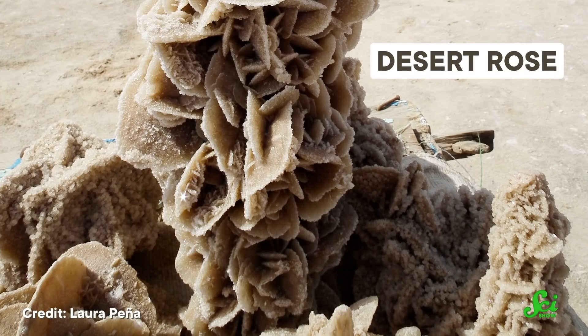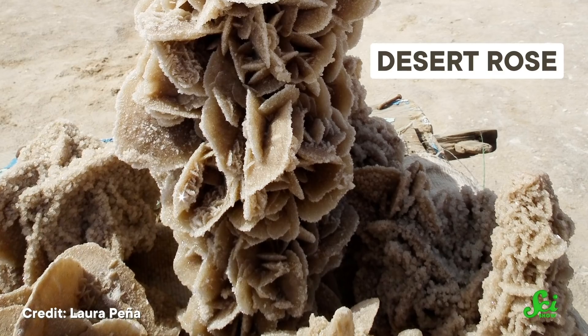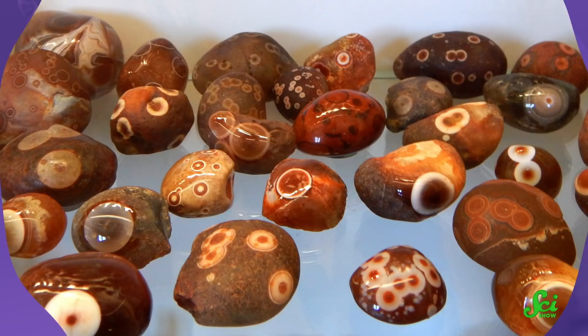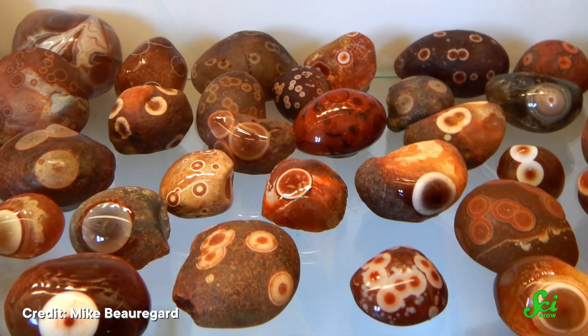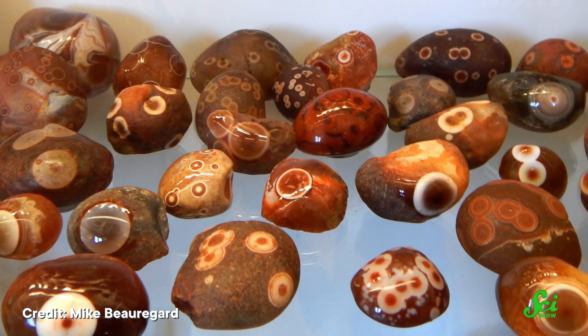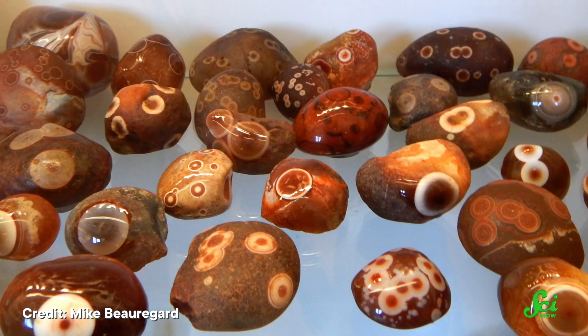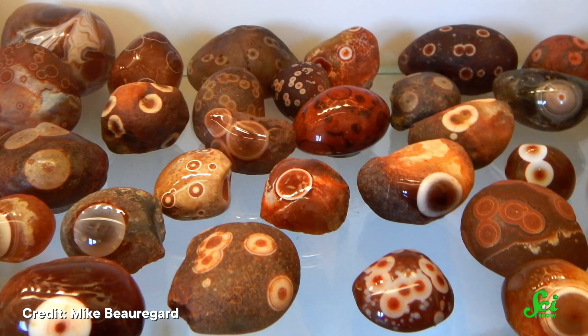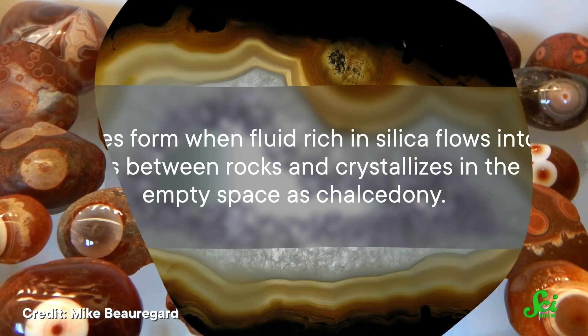Rocks and mineral crystals can often remind us of other things in our daily life. For example, the desert rose is a crystal sand formation that resembles flowers, and the cat's eye is a mineral called chrysoberyl that reflects light in a particularly feline-esque way. This is probably mostly because humans just look for patterns everywhere. But something just feels different about eye agates — when you see something that reminds you of a human characteristic, you might do some good ol' anthropomorphism. These rocks end up looking more like creepy, disembodied eyeballs.